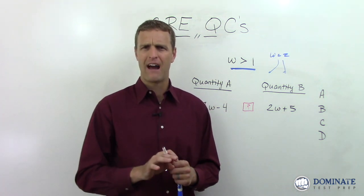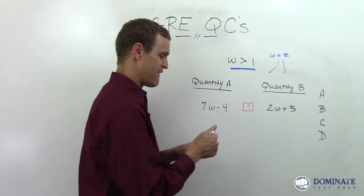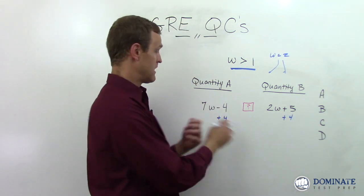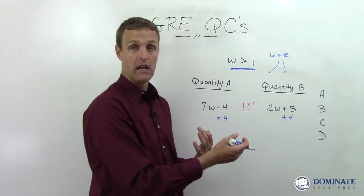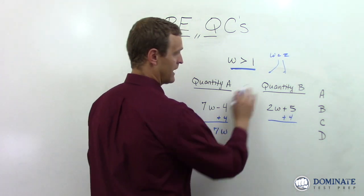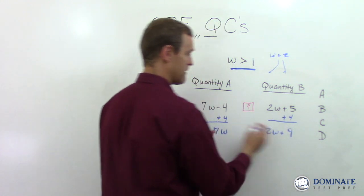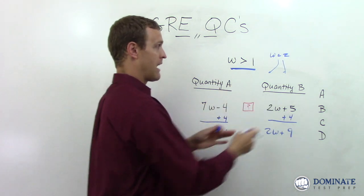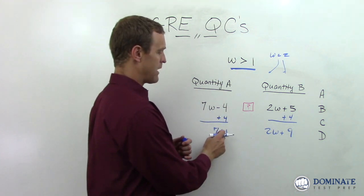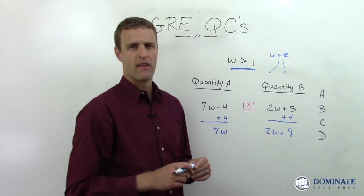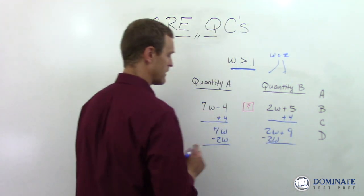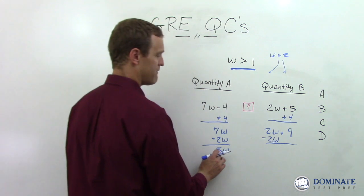Now, you might say: Brett, you said compare, don't calculate — we don't want to actually solve anything. That's true, but what we can do is the following. We can add 4 to both sides. Why? Because if it were an equation or inequality and you were solving for W, you could add 4 to both sides. So quantity A is essentially now just 7W, and quantity B is 2W plus 9. Is it any easier to compare 7W to 2W plus 9? Somewhat. What if we then subtract 2W from both sides? That helps — now we're comparing 5W to just 9.